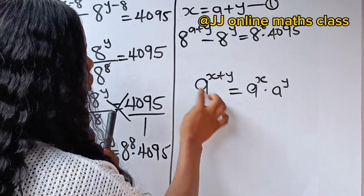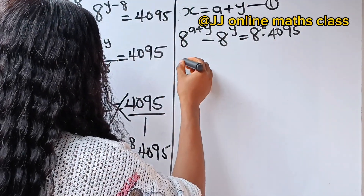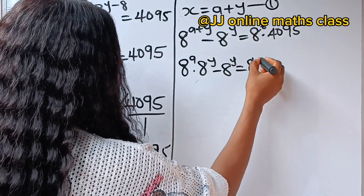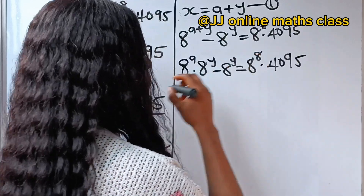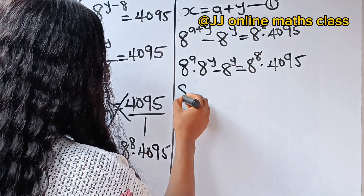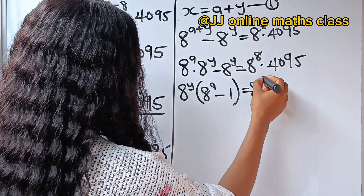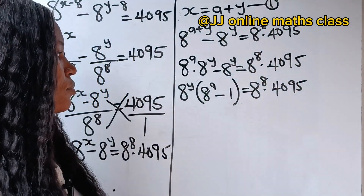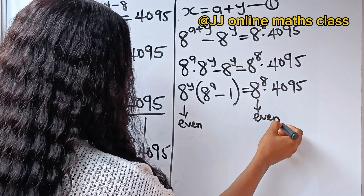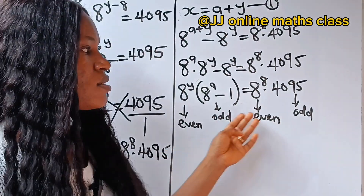If we relate that law to this, that means we can write 8 to the power of a times 8 to the power of y, minus 8 to the power of y, is equal to 8 to the power of x times 4,095. We have 8 to the power of y in both terms, so let's factorize that. We have 8 to the power of y bracket, 8 to the power of a minus 1, is equal to 8 to the power of x times 4,095. Now, this side is even and this side is odd, so let's equate even to even and odd to odd.